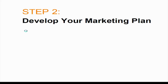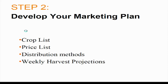Once you know how much you need to make, it's time to figure out how you're going to sell it — that's your marketing plan. The pieces are: what you're going to grow, how much you're going to charge for it, how you're going to sell it through different distribution methods, and what you need to harvest on a weekly basis to meet those marketing outlets.